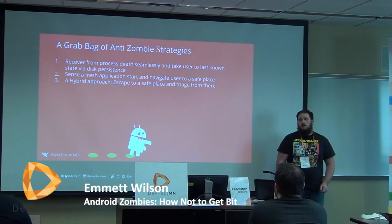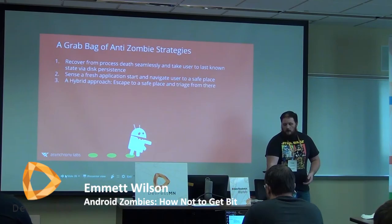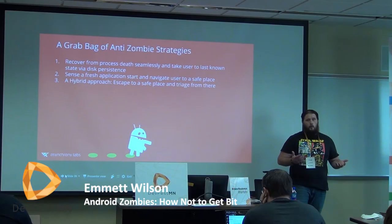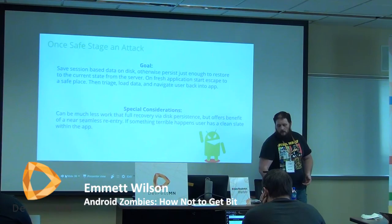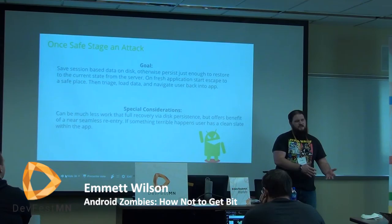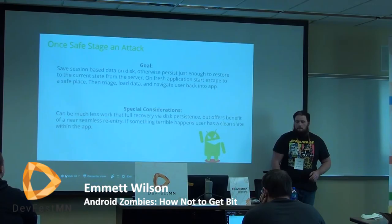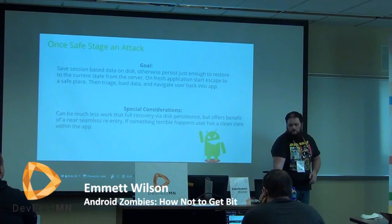My favorite approach is a hybrid. Save some stuff to disk that your requirements allow — non-sensitive data. When you sense a fresh application start, go back to the beginning, but then sense where you are, what the user was trying to do, and bring them forward to where they expect to be. This could be part of your loading screen experience. The goal is to save just enough data on disk to get back to where you want to go, triage where you're at when sensing a fresh application start, then stage an attack and bring the user forward into whatever workflow they were doing. It's much less work than full disk persistence but offers some of the benefits of giving users a seamless re-entry.